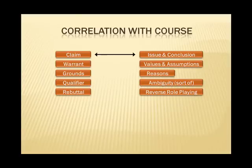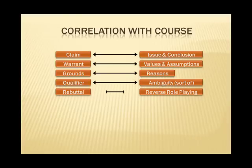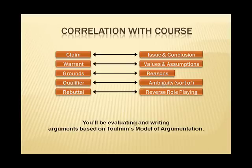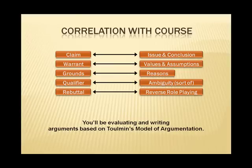Each of the concepts of argumentation you read about in 'Asking the Right Questions' has a counterpart in the Toulmin model of argumentation. The issue and conclusion are equivalent to the claim. The reasons are the grounds. Ambiguities fall into the qualifier category, though there's more to it than that. Values and assumptions are included in Toulmin's warrants. And the strategy of reverse role playing is a tactic for recognizing rebuttal. The Toulmin model is a valuable aid in both constructing and deconstructing, or analyzing, arguments.